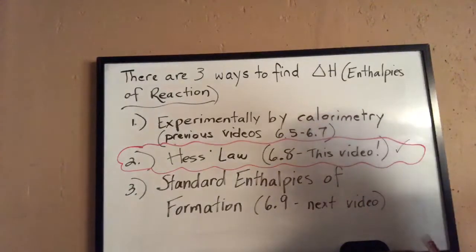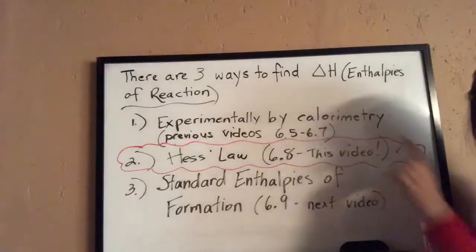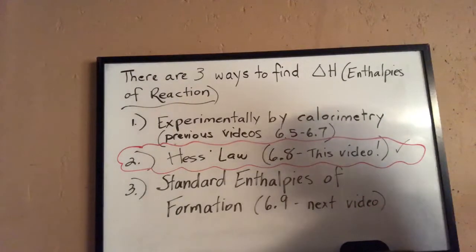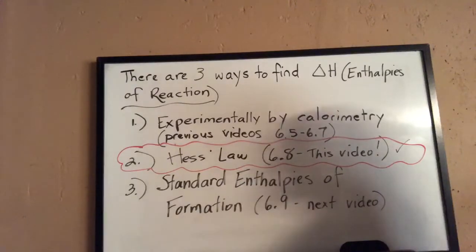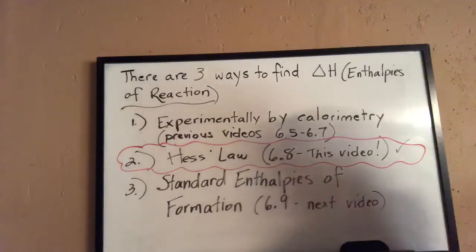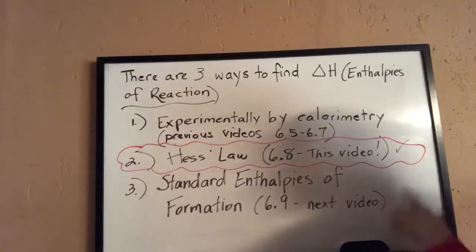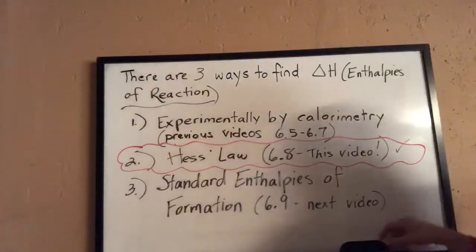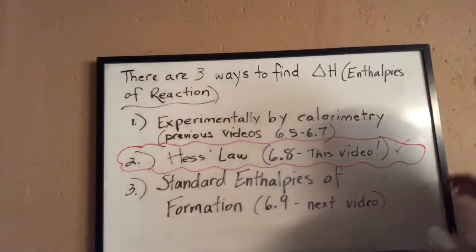You can't always determine the enthalpy of reaction experimentally — it might be too dangerous, you may not have the equipment, or it might be a complex set of reactions. In that case, we would use Hess's law, or the following method we'll discuss in the next video. So let's look at Hess's law, section 6-8.